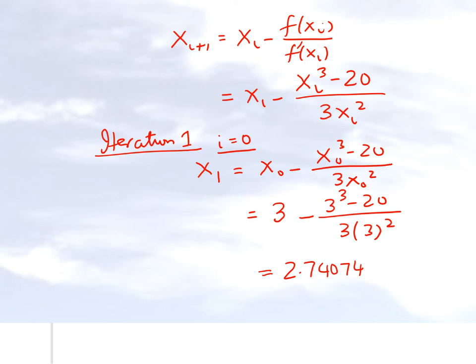And this gives us a number of 2.74074. So if that is the case, now what we're going to do is see what kind of relative approximate error we get from here for iteration 2.